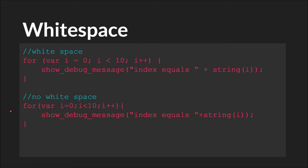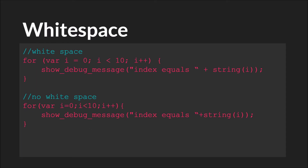Next up, we have whitespace. Whitespace simply means putting spaces between characters. Here we have code with spaces, and here we have code without. There's no right or wrong answer, but there are better and worse answers, and this is one of those times where I think having spaces is better. For me, this is easier to read — especially right here and right here. I struggle a little bit without those spaces.